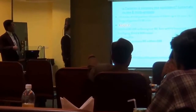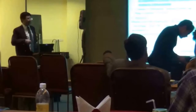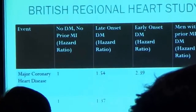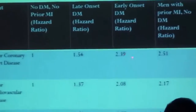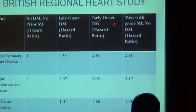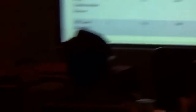There is also an interesting systematic review and meta-analysis showing that the duration of diabetes is also very important. The British Regional Heart Study told us that early-onset diabetes is a risk factor similar to men who have had previous MIs — so early-onset diabetes is equivalent to coronary artery disease. But late-onset diabetes is not equivalent to a past MI and is not a CAD equivalence.